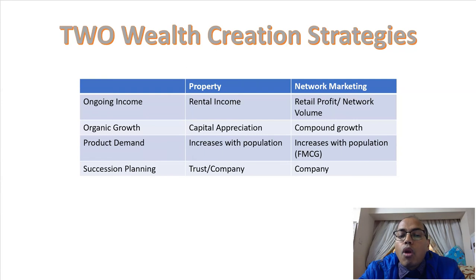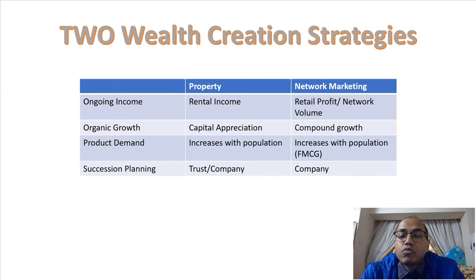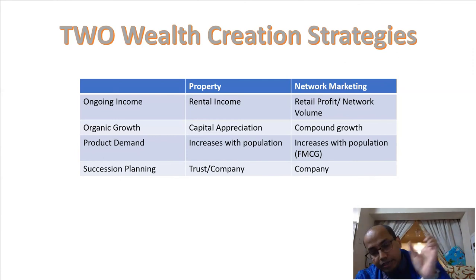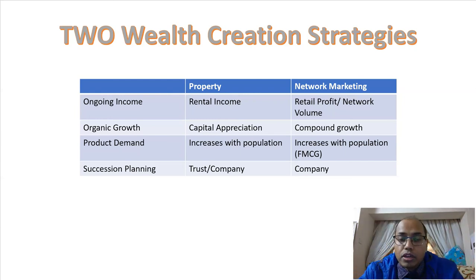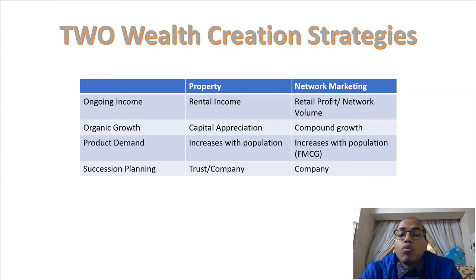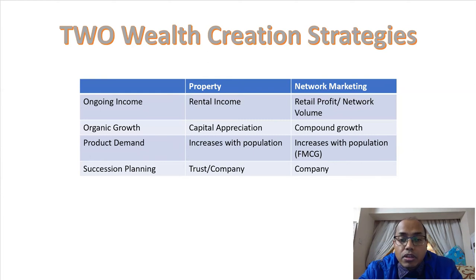Both property business and network marketing business generate an ongoing income based on the efforts you put in over a certain duration of time — they keep generating that ongoing income, meaning you don't have to keep working for it. For example, rental income: once you buy or own a house and rent it out, you don't have to work for the rent.